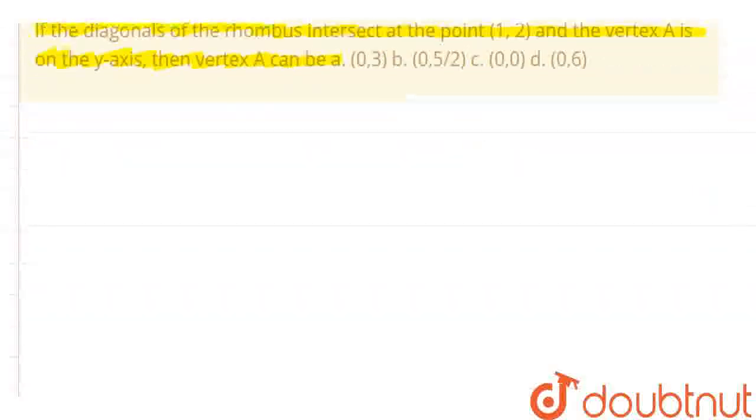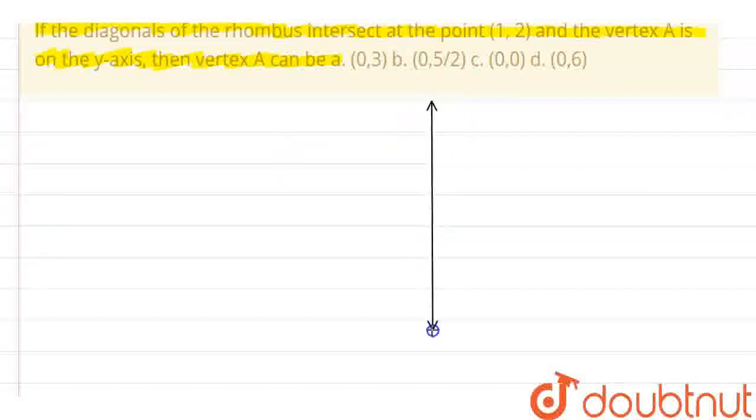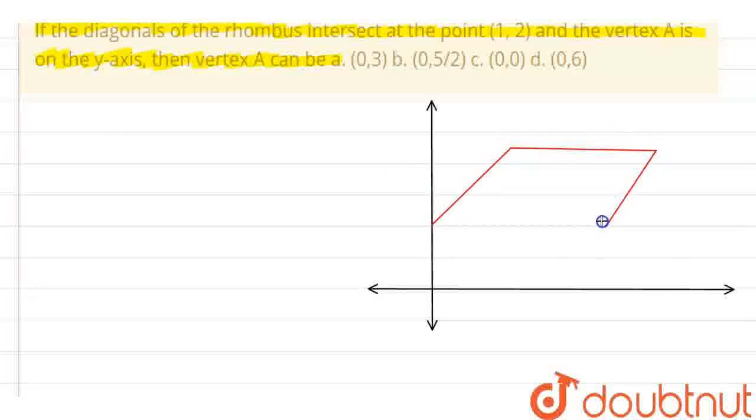So first of all, let me draw this. We have this is my axis, let's suppose. This is my axis and we know that this is my rhombus. Let this be a rhombus. Now, if I say this is my vertex A, let it be (0, k).